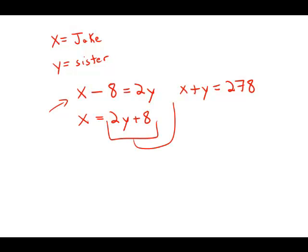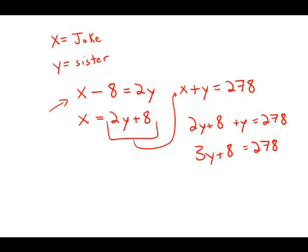Now I'm going to plug this in for X in the second equation. I'm going to get 2Y plus 8 plus Y equals 278, or 3Y plus 8 equals 278. Subtract 8 from both sides — we get 3Y equals 270. Divide by 3, and Y equals 90.